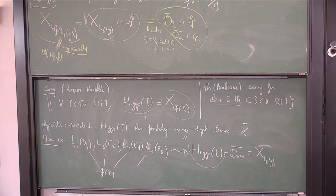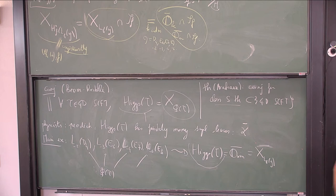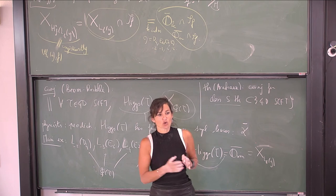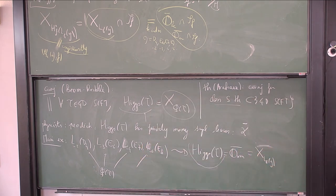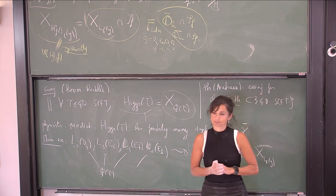It is also natural to look for a simple W-algebra isomorphic to an affine one — that is, when f' is the unit (f = 0) on the other side. In this situation k is called collapsing. This is what we want to classify, though it is too optimistic to classify all levels for which this holds, so we treat particular cases.